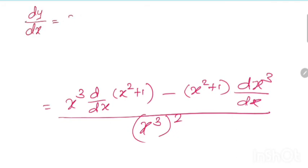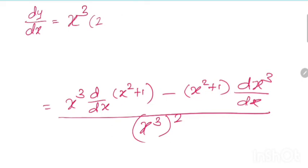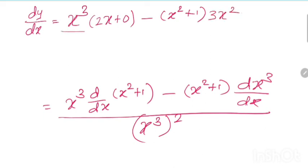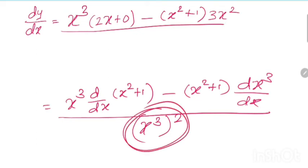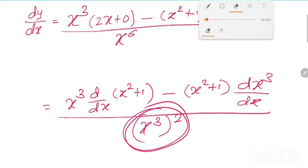The derivative of x square is 2x and derivative of 1 is 0, so x square plus 1 gives 2x. The derivative of x cube is 3x square. The denominator x cube squared gives x to the power 6. So we have x cube times 2x minus x square plus 1 times 3x square, divided by x to the power 6.